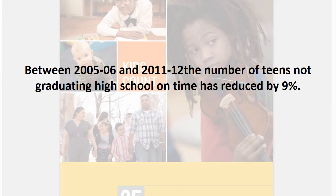Statistics are often used in presentations to make a point or demonstrate a fact. It's important to know where these statistics come from. According to the 2014 Kids Count Data Book published by the Annie E. Casey Foundation, the number of teens not graduating high school on time went from 27% to 19% between 2005 and 2012.